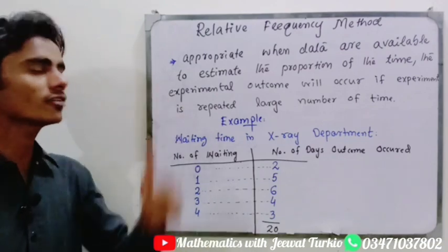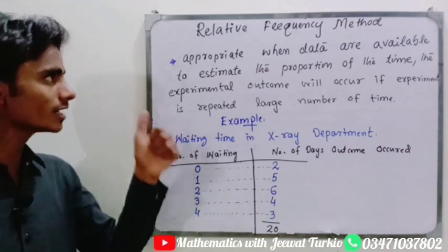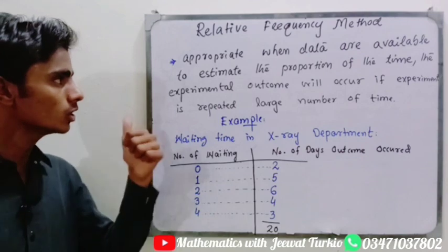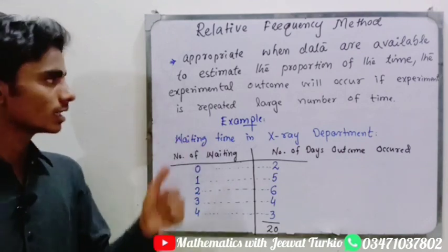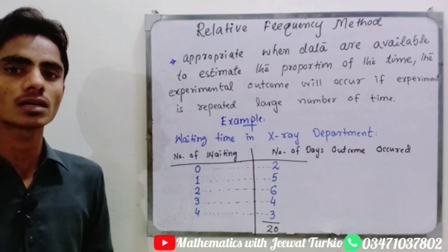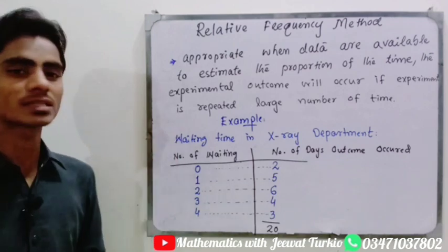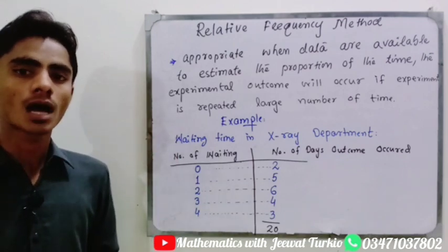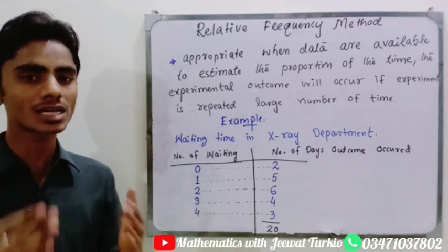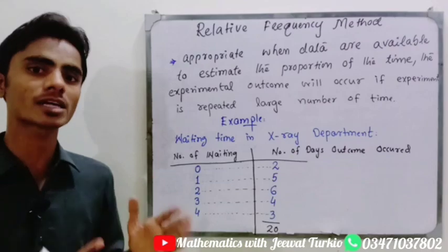Now we will discuss another method to assign probability: the relative frequency method. The relative frequency method is appropriate when data are available to estimate the proportion of the time an experimental outcome will occur if the experiment is repeated a large number of times. It is appropriate when we have data from repeated performances of the same experiment.